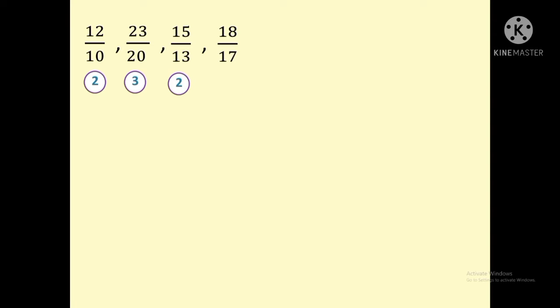Since this is not Type 1 and the differences are not the same, we cannot apply trick 1. Instead, we are going to create new fractions by replacing the denominator with the corresponding difference. So 12 by 10 becomes 12 by 2, and 23 by 20 becomes 23 by 3, and 15 by 13 becomes 15 by 2, and 18 by 17 becomes 18 by 1.